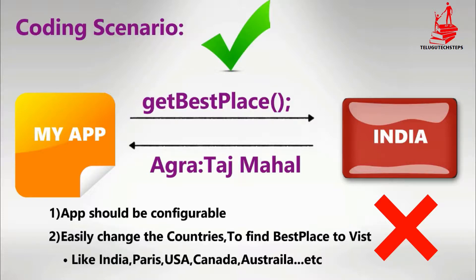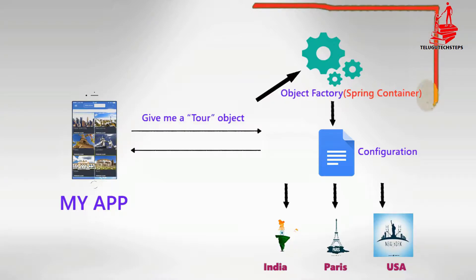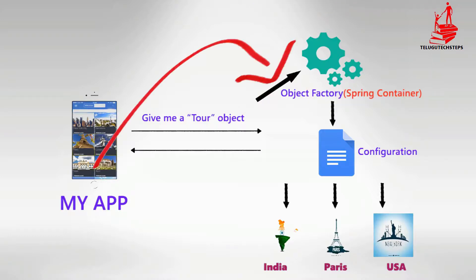That requirement is addressed by Spring Framework. In Spring Framework, we have an Object Factory — that is nothing but the Spring Container. Through our application, we can ask for an object. We go to Spring Container and say: 'Hey Spring Container, give me a tour object based on a configuration file or annotation.'